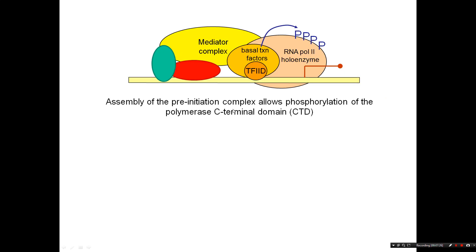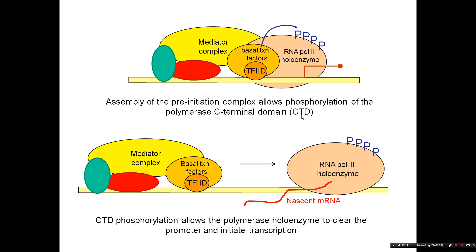Transcription initiation is caused by phosphorylation of particular sites in the C-terminal domain of RNA polymerase II. When this phosphorylation occurs it allows the release of the polymerase, which starts transcribing and leaves all the transcription factors behind at the promoter.